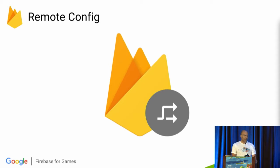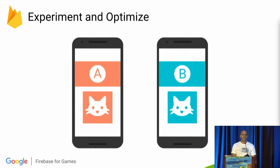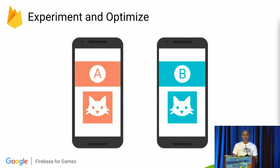We also have Firebase Remote Config. It's an experiment framework which enables you to adjust game parameters in order to maximize user engagement. You can deploy your game and adjust parameters without redeploying a new build. For example, if you suspect players are leaving your game due to your ad display strategy, you could run an experiment where you reduce the frequency of ad display or move your ad display points to see whether it affects user retention.